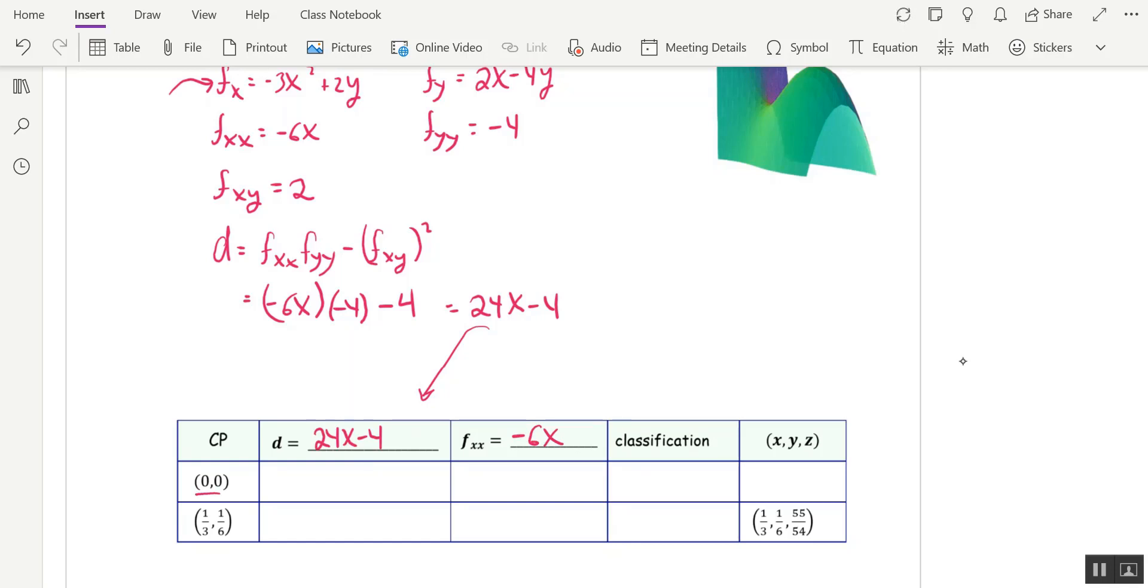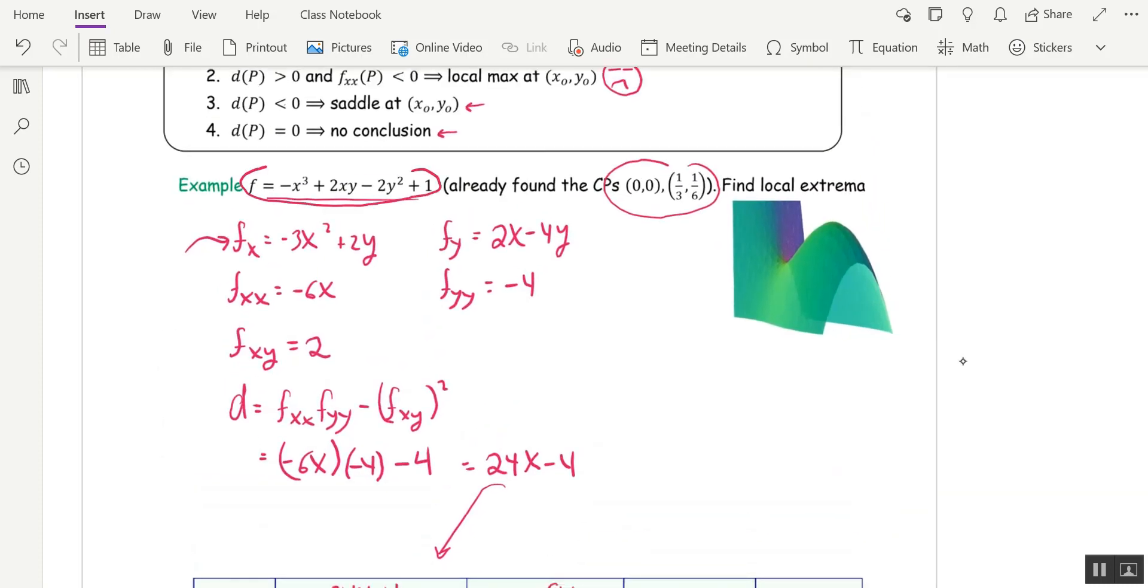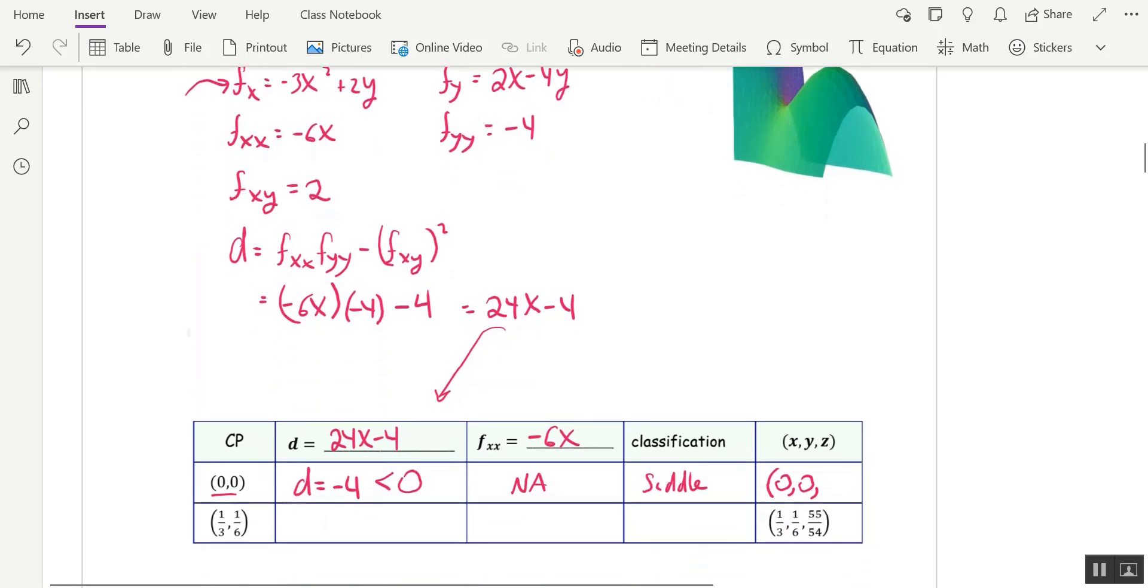At 0, 0, I plug 0, 0 into the discriminant. So when x is 0, d is negative 4. That's less than 0. So if you jump back to the second derivative test, when d is negative, you have a saddle. It doesn't matter what fxx is. So we have a saddle. And to get the three coordinates, I've got x and y already. And to get z, I go back to the original function up here. That's z. And I plug 0, 0 in for x and y, and I get 1.